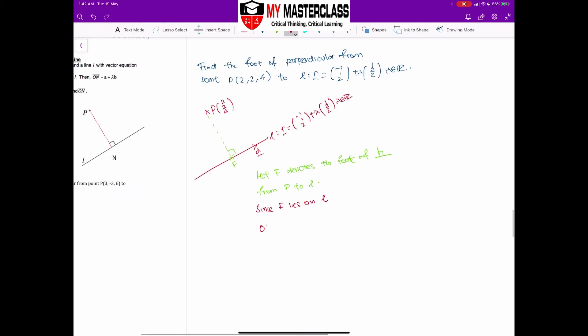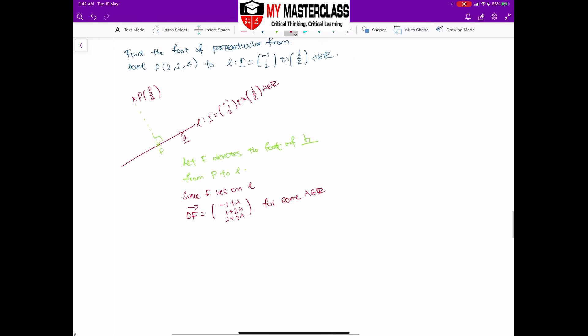And I can say that OF will essentially be equal to (-1 + lambda, 1 + 2λ, 2 + 2λ) for some lambda as real number. When I talk about for some lambda as real number, it means that if I substitute in a specific value of lambda, I will definitely be able to get OF. That's what the phrasing is trying to say here.